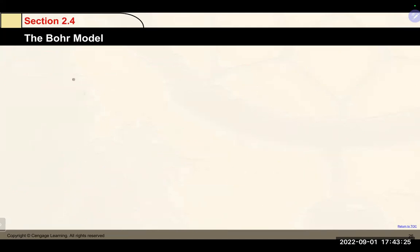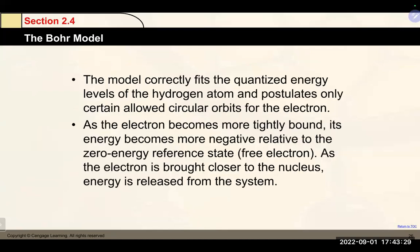Bohr's model of the atom falls apart as we move away from hydrogen, but it does explain the spectral lines. Electrons are restricted to being in one orbit or energy level, or moving from one to the next. As electrons move closer to the nucleus, energy is released. The only way to bring an electron closer to the nucleus is for it to drop energy levels — that energy is given off. Conversely, gaining energy (like putting a wire in a Bunsen burner) causes electrons to go up in energy.